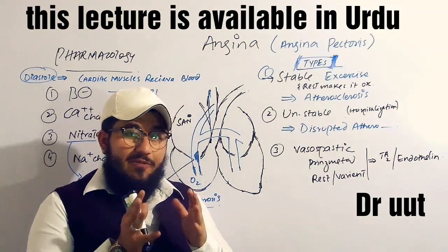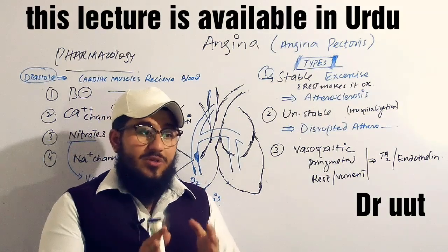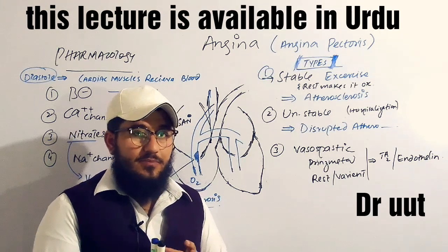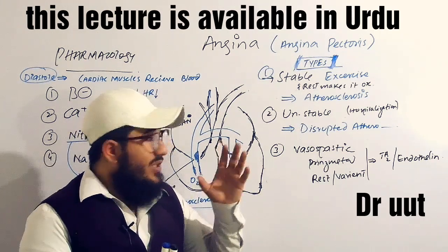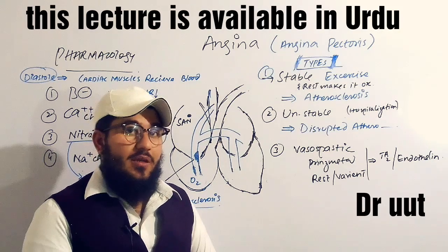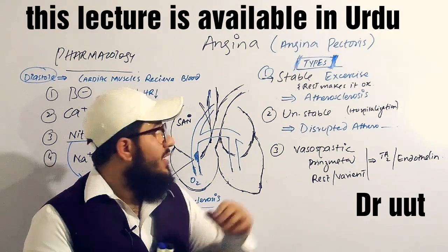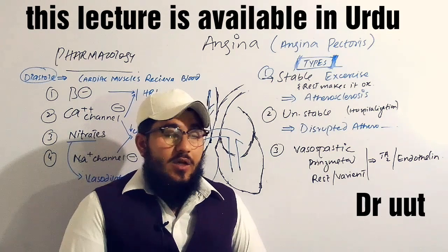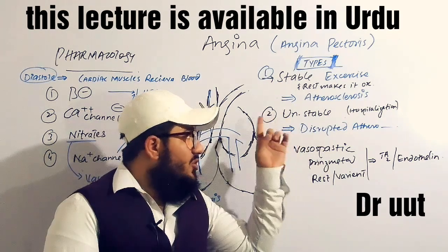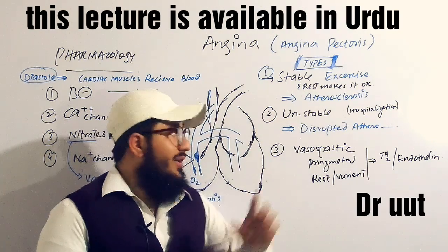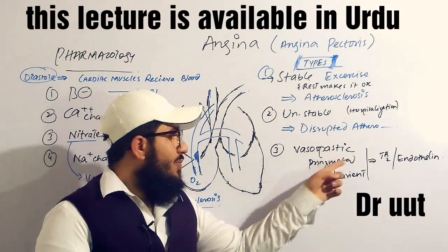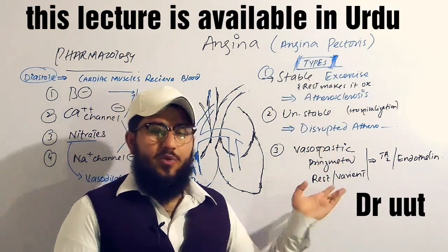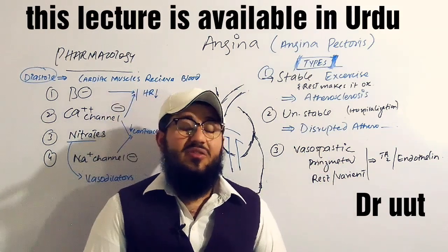There are three types or three categories of angina, pharmacologically, physiologically, and pathologically. The very first type is called stable angina, the second is called unstable angina, and the third one is given three names: vasospastic, Prinzmetal, or variant angina — it can also be called rest angina.